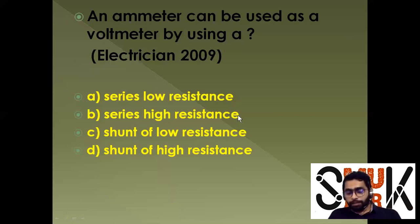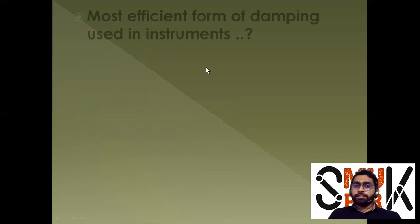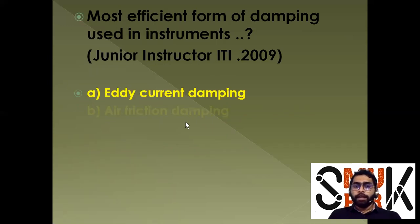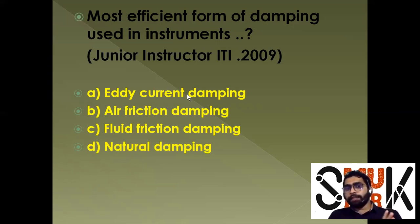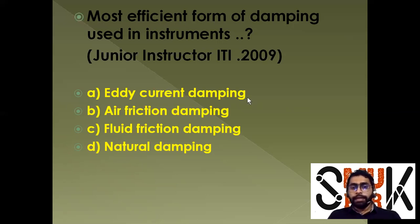The most efficient form of damping used in instruments: options are A) eddy current damping, B) air friction damping, C) fluid friction damping, D) natural damping. The most efficient damping is eddy current damping. Option A is the correct answer.